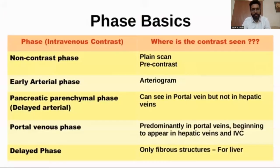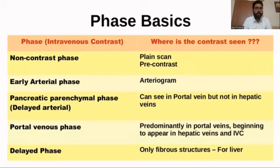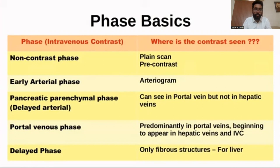There are different phases. In the non-contrast phase, no contrast is seen — it is the plain pre-contrast phase. Early arterial phase is usually seen in arteriograms. Then there is the pancreatic parenchymal phase, also known as the late arterial phase, where contrast is seen in the portal vein but not in the hepatic vein. The portal venous phase shows contrast predominantly in the portal veins, beginning to appear in the hepatic vein and IVC. The last is the delayed phase, where only fibrous structures such as the liver are focused.